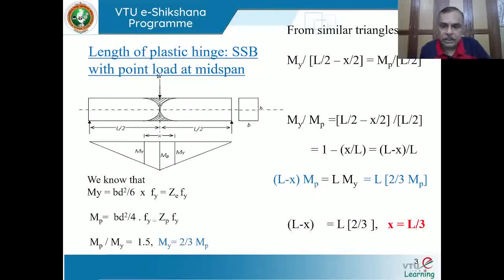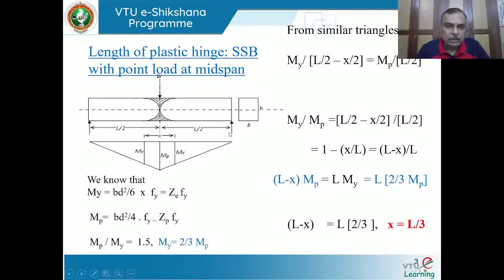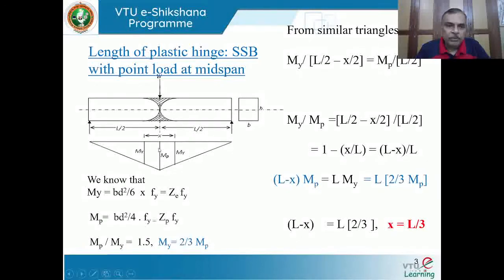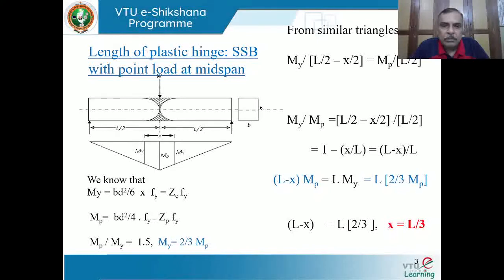If you have a rectangular beam where the length is about L — say L equals 3 meters — near the center where the load is acting, for a length of 1 meter a plastic hinge is formed, undergoing continuous deformation leading to collapse. In a simply supported beam, the two end points where the beam is supported act like hinges — referred to as mechanical hinges. At these supports the beam rotates with respect to the end.